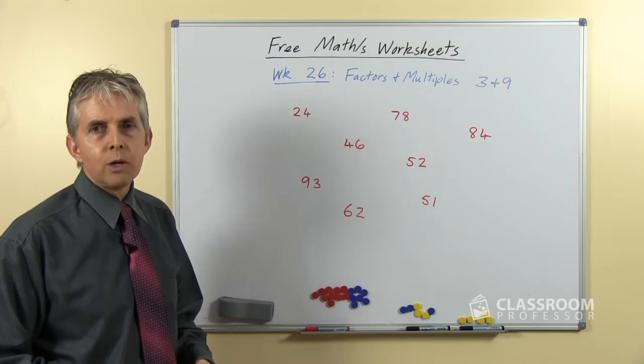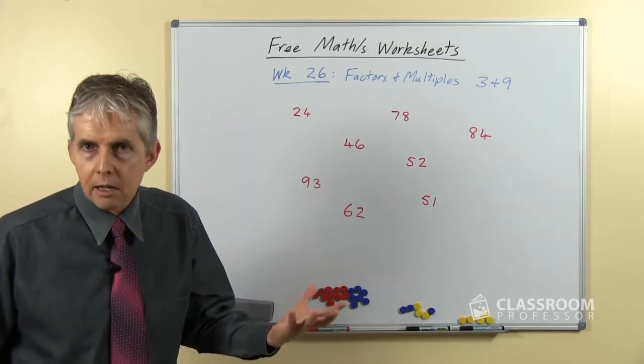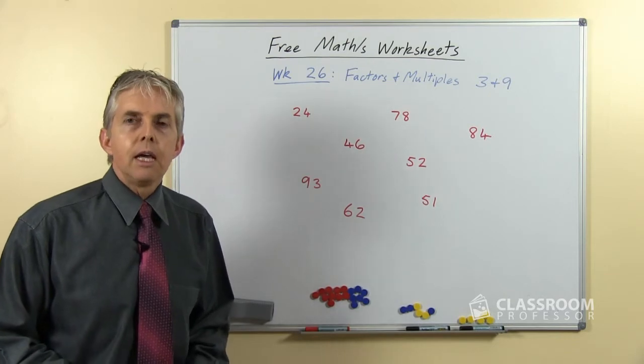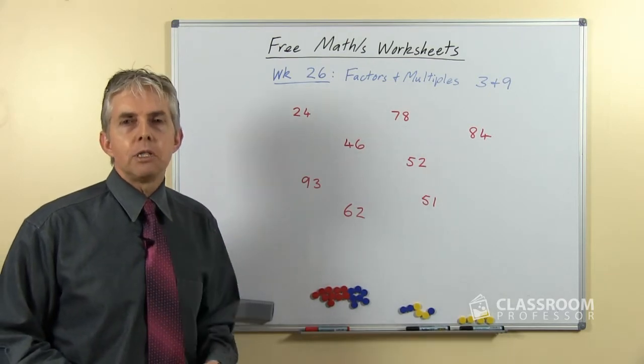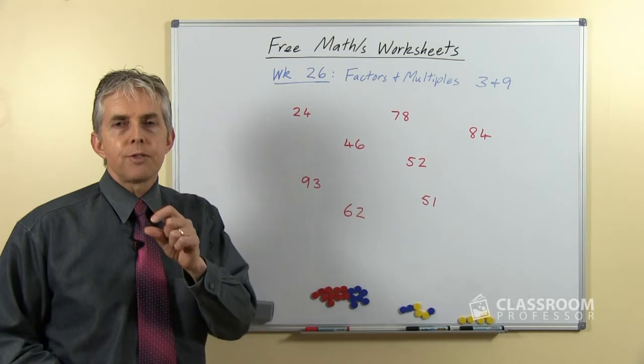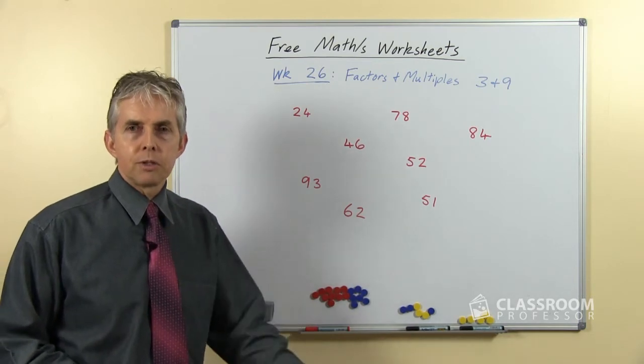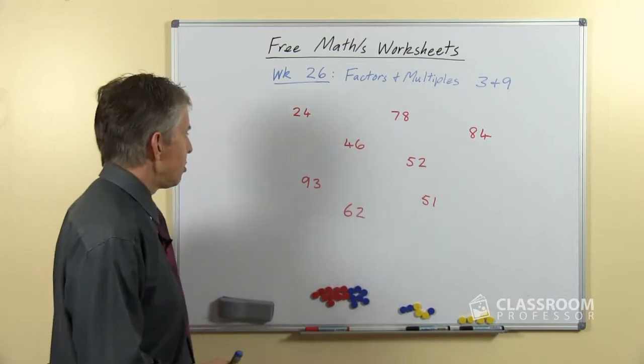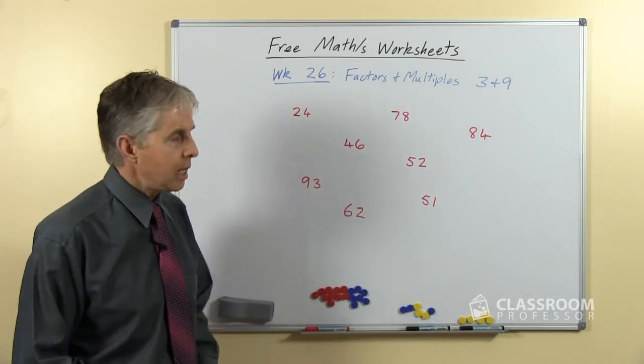Now the method that we can use, which is really neat—I remember being quite excited when I heard about this—is that if you add the individual digits together, if the sum of the digits is a multiple of three, then the entire number is a multiple of three, which I think you'll agree is pretty neat.